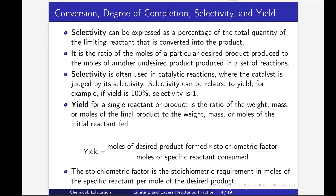Next is yield. Yield for a single reactant or product is the ratio of the weight, mass or moles of the final product to the weight, mass or moles of the initial reactant feed. Yield is moles of desired product formed multiplied by the stoichiometric factor, divided by moles of the specific reactant consumed. The stoichiometric factor is the stoichiometric requirement in moles of the specific reactant per moles of the desired product.